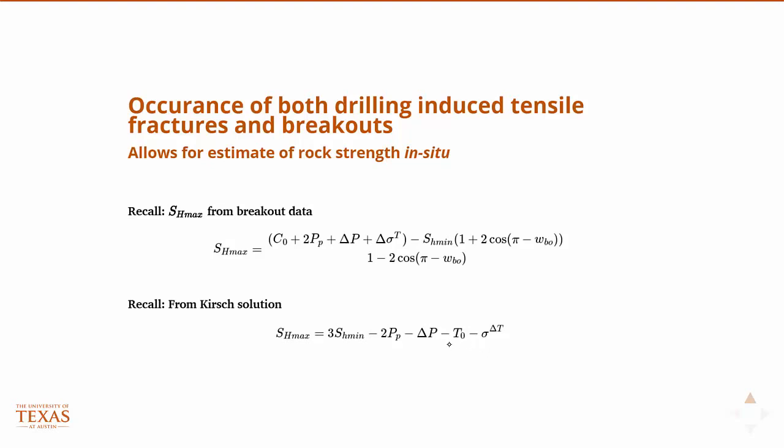And so if we have tensile-induced fractures and then we can measure SH min from a D-fit analysis, then we plug that all back into the first equation, and we measure the, so we log the well, we have the wellbore breakout width, we do D-fit, we have SH min. Then the only unknown in that scenario then is CO, and you can actually solve this equation for the strength of the rock.